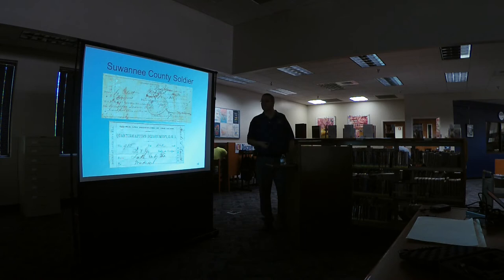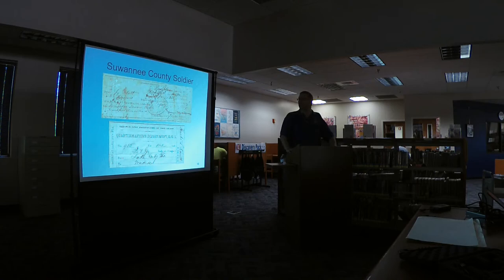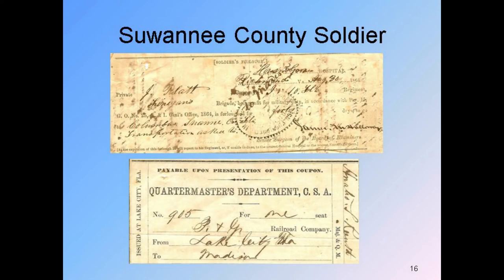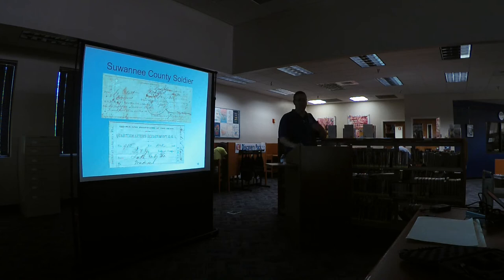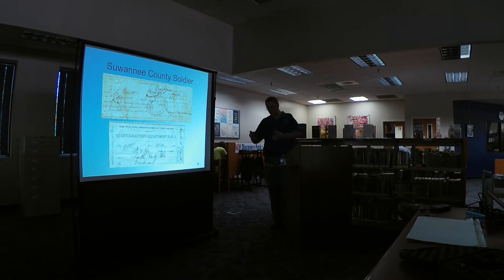Among other interesting documents: the speaker has furlough papers for a Suwannee County soldier named John Platt, who was in a Virginia hospital after apparently being injured in combat. His furlough allowed him to travel home to Columbus. The Quartermaster's Department document shows his transport from Lake City to Madison and then on to Columbus. It includes details like his age, eye color, and hair color. Incidentally, John Platt was the second person to get a marriage license in Suwannee County.